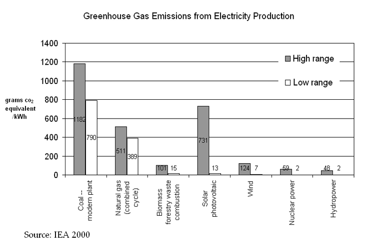Fossil fuel may be phased out with carbon-neutral and carbon-negative pipeline and transportation fuels created with power-to-gas and gas-to-liquids technologies. Carbon dioxide from fossil fuel flue gas can be used to produce plastic lumber, allowing carbon-negative reforestation.